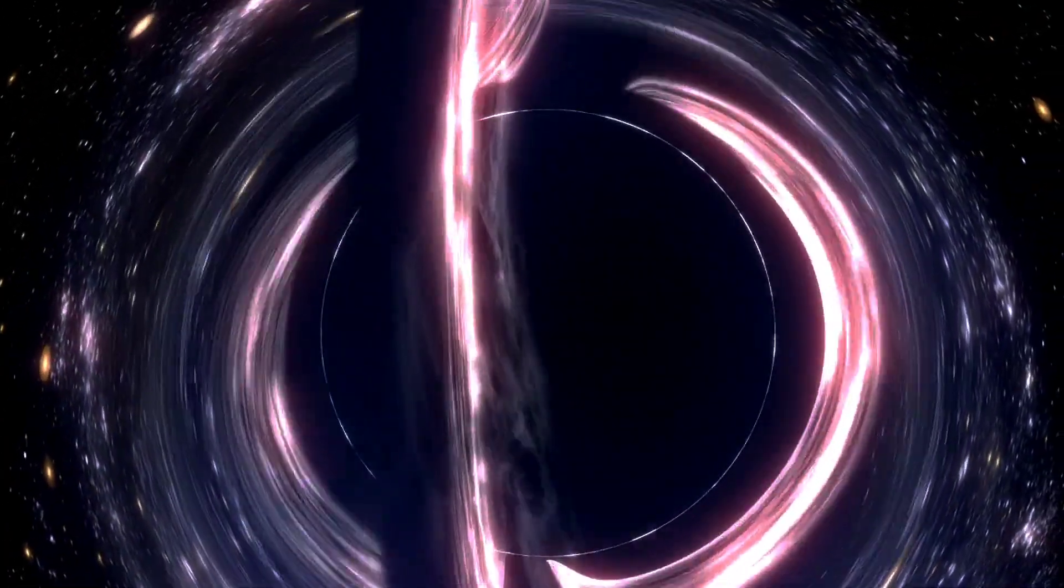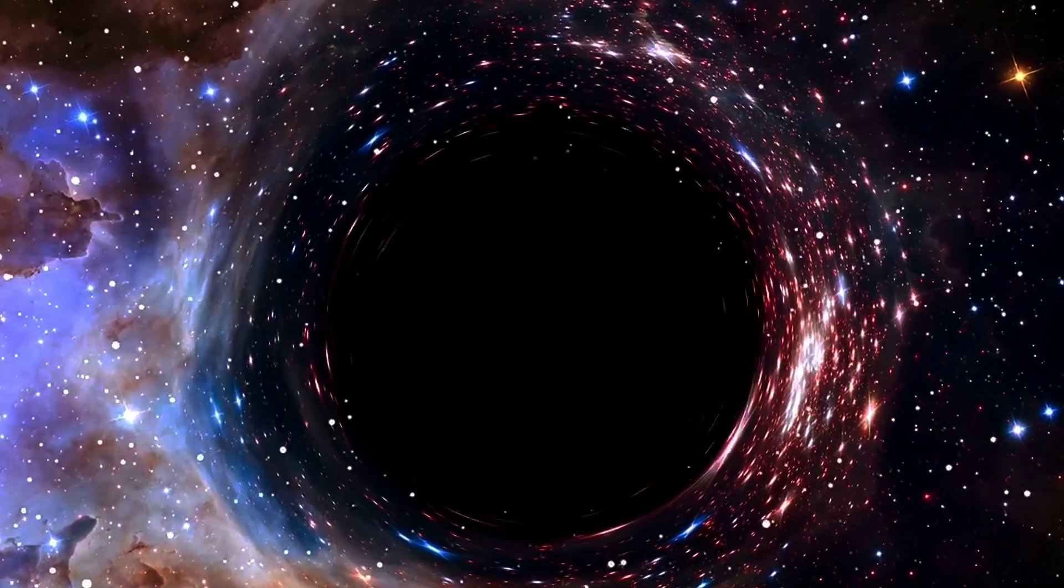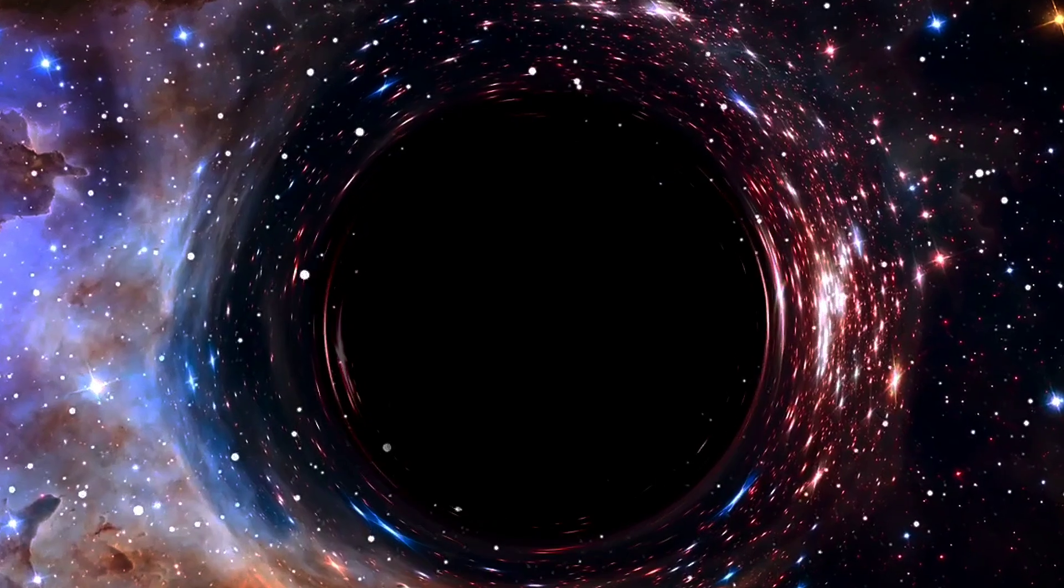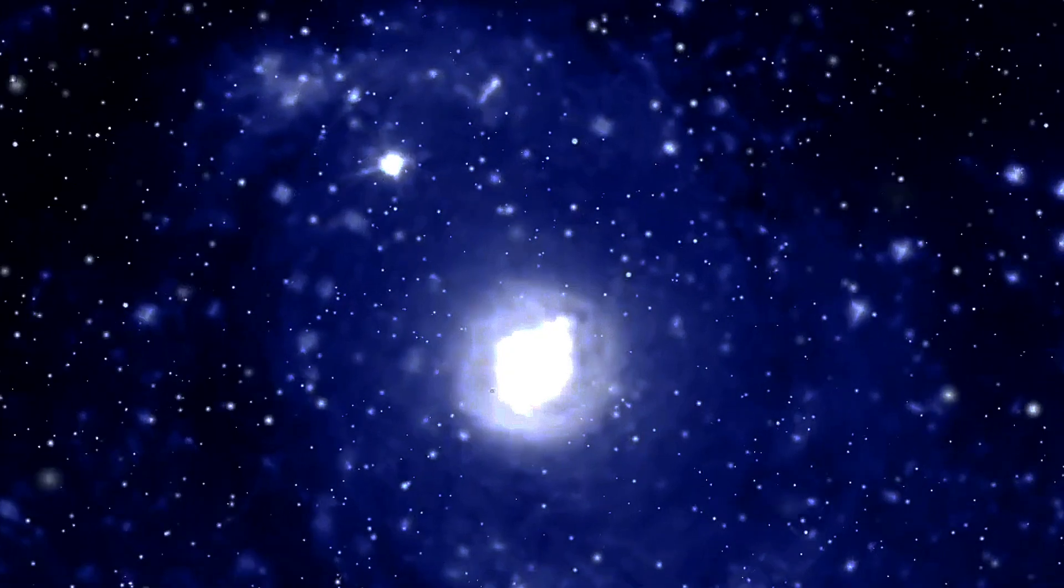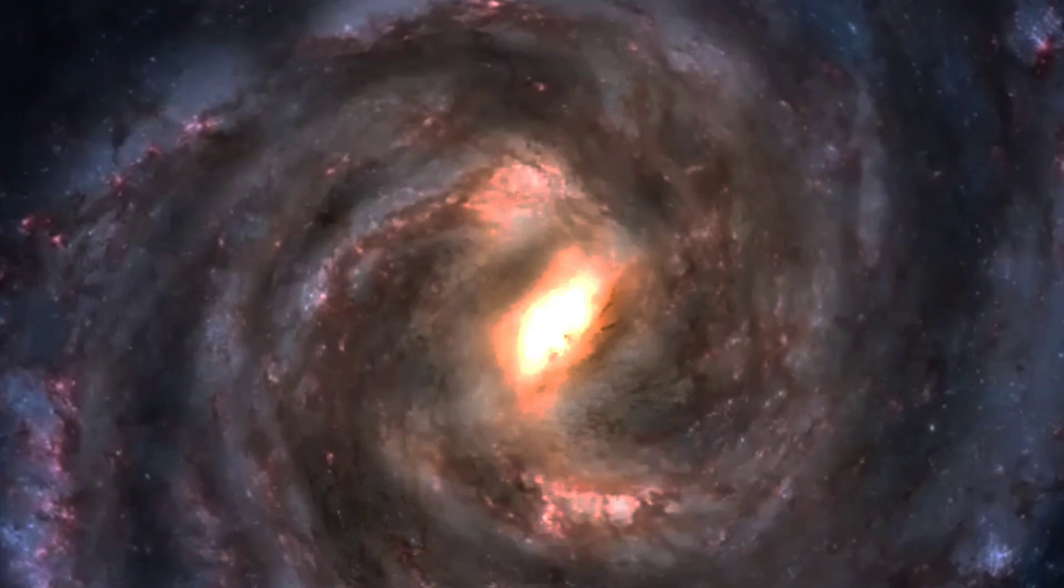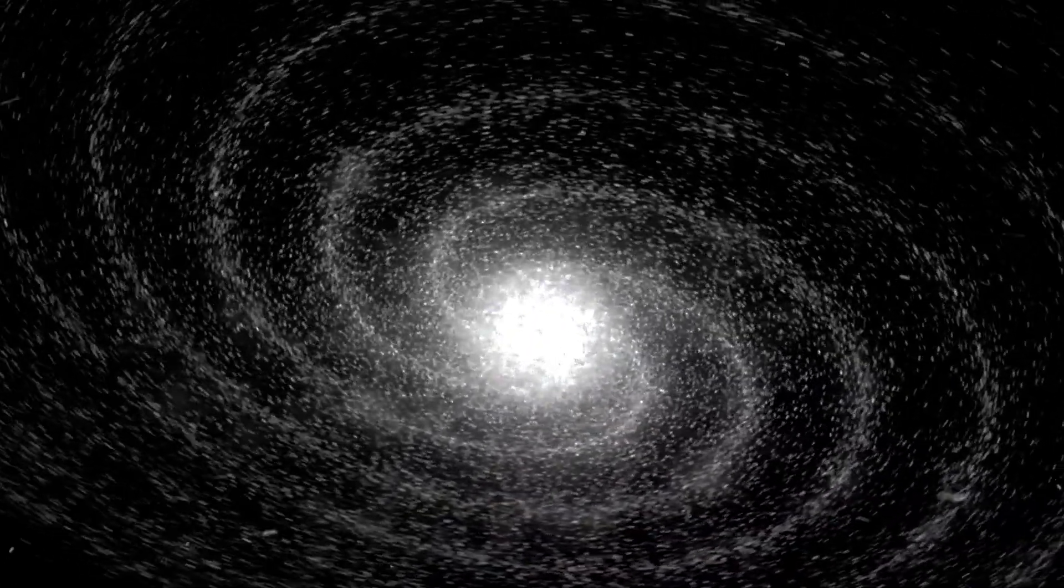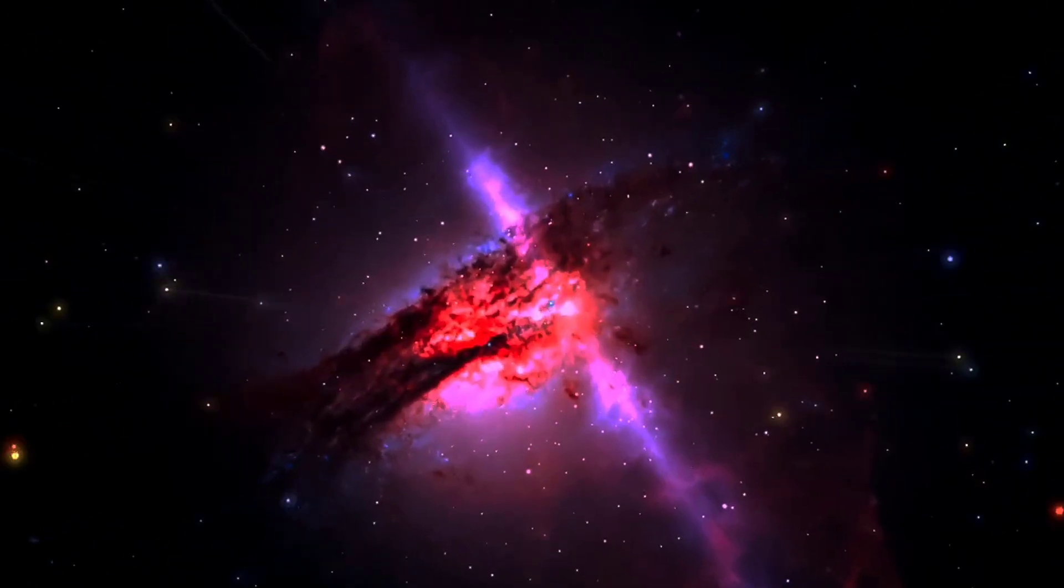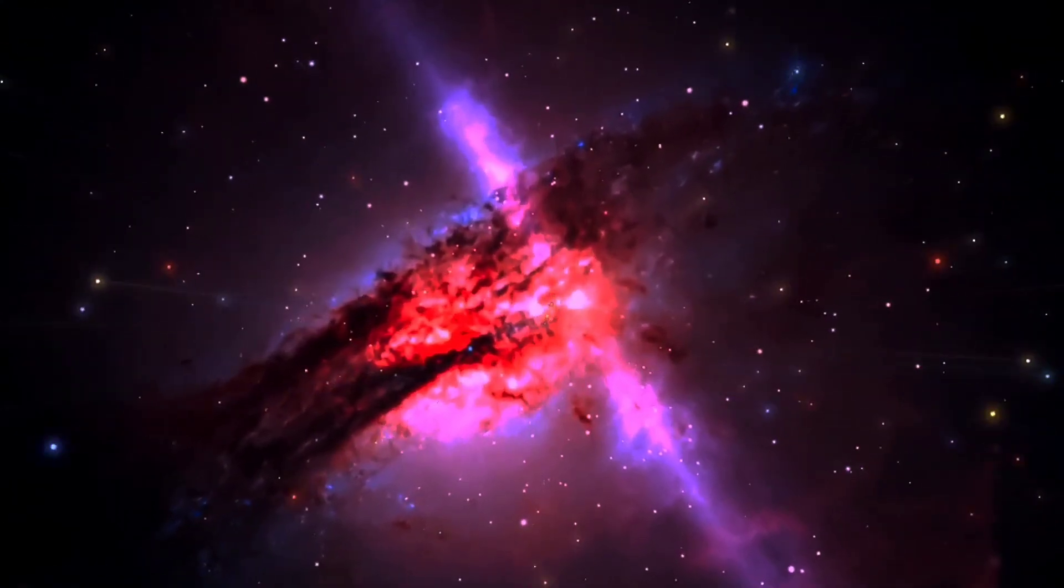Although we've never directly detected dark matter and may never do so, dependent on its nature and properties, the fact is that no modified gravity theory can account for all of the observations without either including some type and amount of dark matter or something else, like a field that clusters, that behaves indistinguishably from dark matter. That's why it's so interesting to look at the systems—low mass galaxies, and in particular ultra-diffuse low mass galaxies—that deviate the most from our standard universal profile dark matter predictions.